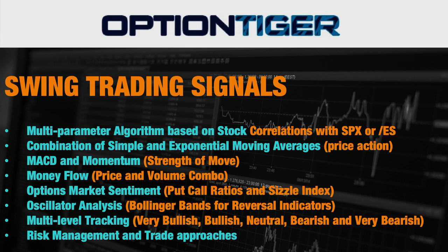You're going to see all of this in a live demo at the end of this video. We'll also include all the risk management and trade approaches appropriate for a swing trading environment. Coming back to the price indicators, we have a combination of simple and exponential moving averages — three different averages go into the algorithm. We also have the strength of the move, which is the momentum. For the price and volume combo, we use the money flow indicator, which combines both price and volume in the context of a bullish or bearish move.